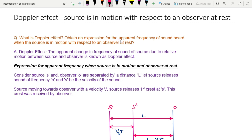Apparent frequency means the actual increase or decrease in frequency as perceived. If we talk about an increase or decrease in frequency, it is called apparent frequency. Here is the source and observer. An increase or decrease in observed frequency is what we call apparent frequency.